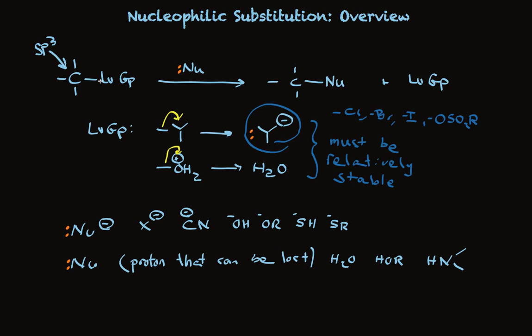Something that's a leaving group that can disappear with a pair of electrons to make something stable is replaced with a nucleophile, something that has a pair of electrons to share to make a new bond. And this would be a set of compounds that fits.